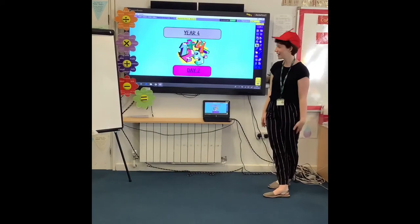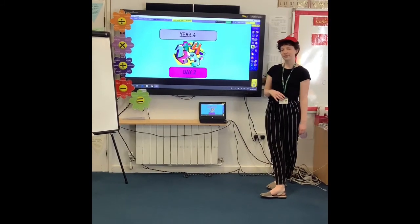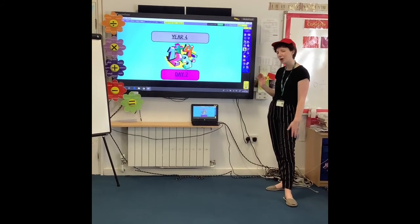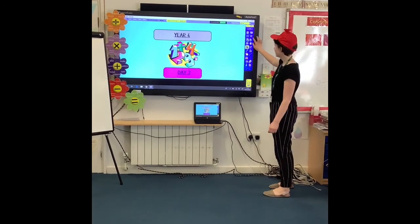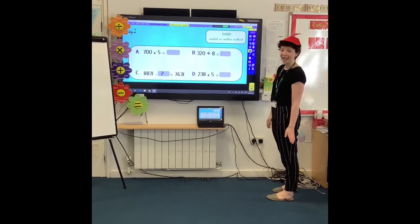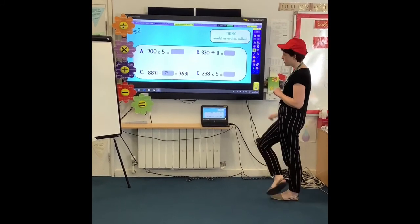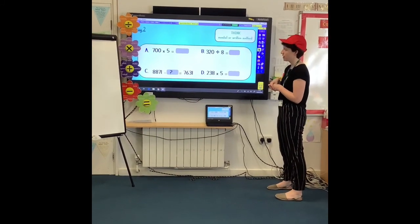Hi, year four. Welcome back. Today was fluent in five. Today we went for the Tweedledum cat from Alice in Wonderland last year. So again, you are going to have to choose whether to do a mental method or a written method. So we've got A, 700 times five.